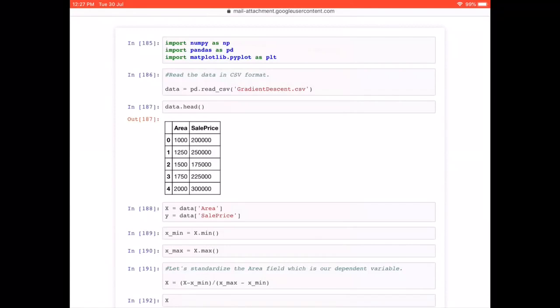The first thing that we do is we are going to read the libraries. So we are using numpy, pandas and matplotlib. The next step is to read the data in CSV format. And we have just given the file name as gradient descent dot CSV. And I'm using the Anaconda Python distribution, but you can use any Python software for this one.